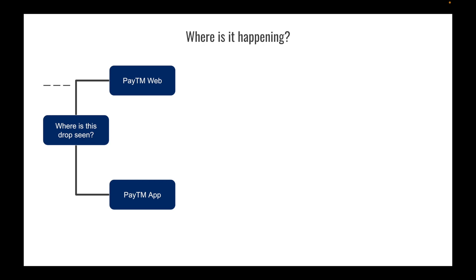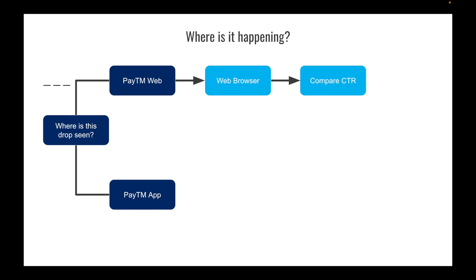If the majority of the drop is seen on web, we can infer it's caused by some browser glitch. We can also compare the CTR — click-through rate. If the CTR from pre-drop to after-drop remains the same, there's no change to UI/UX. But if there's a massive drop in the click-through rate of the movie icon on the web page, something is wrong — users may not be able to see the icon.